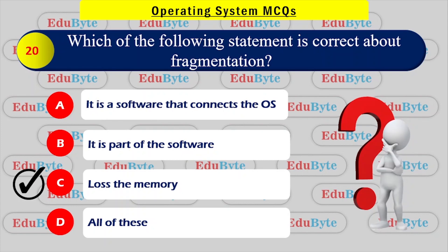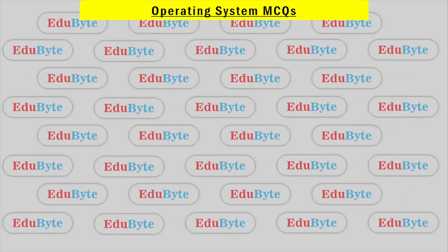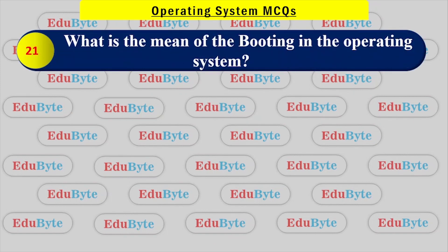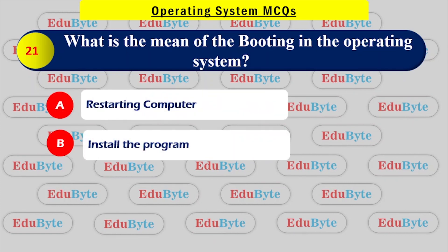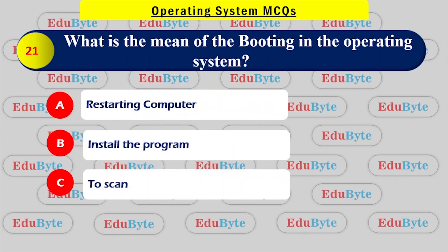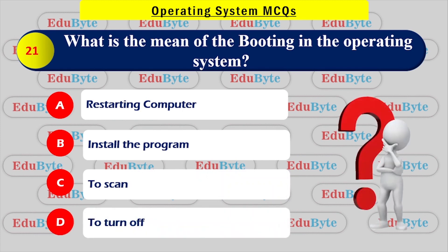What is the meaning of booting an operating system? Options: starting the computer, installing the program, scanning, turning off. The correct answer is starting the computer — booting means starting up the computer.